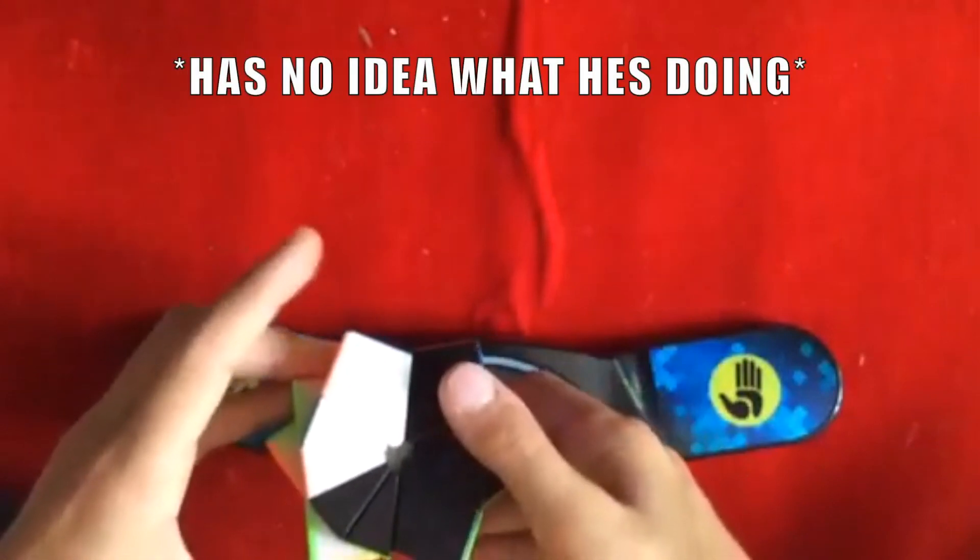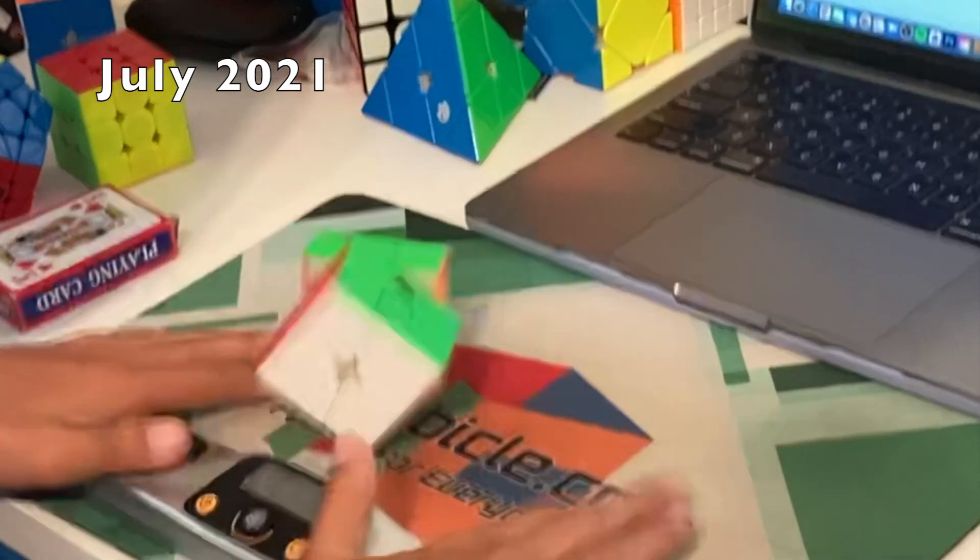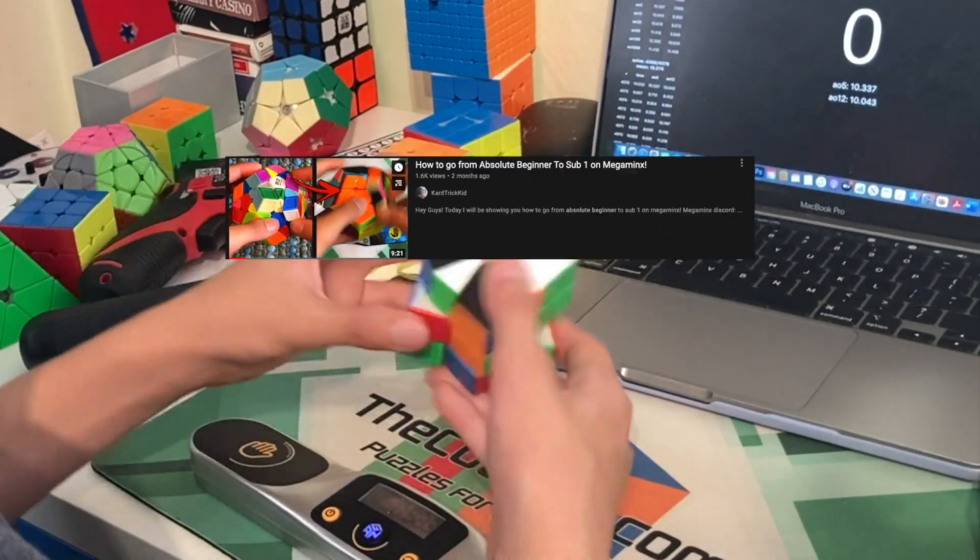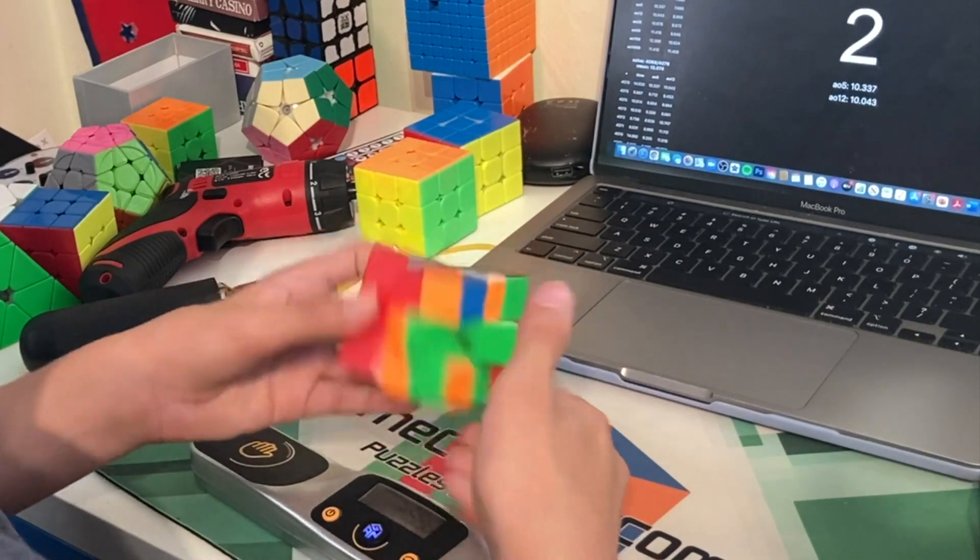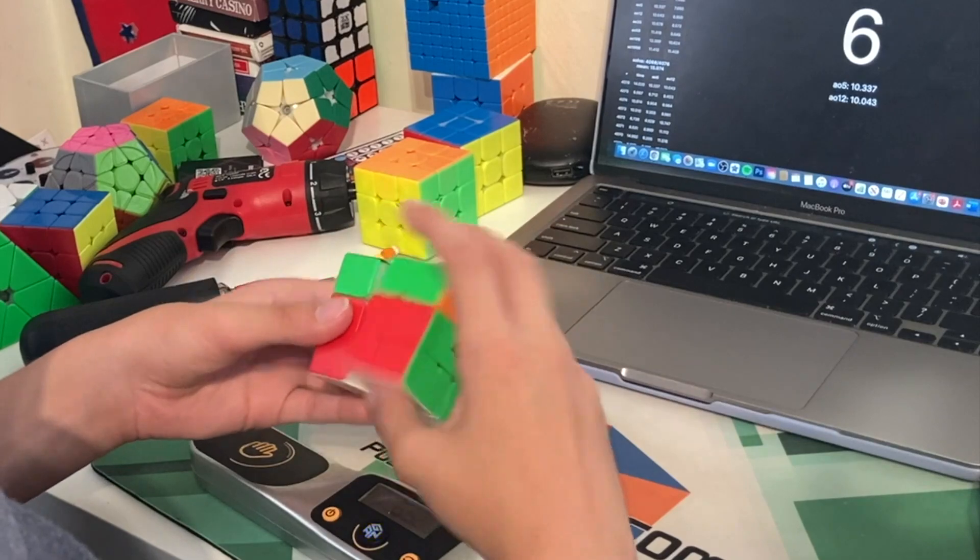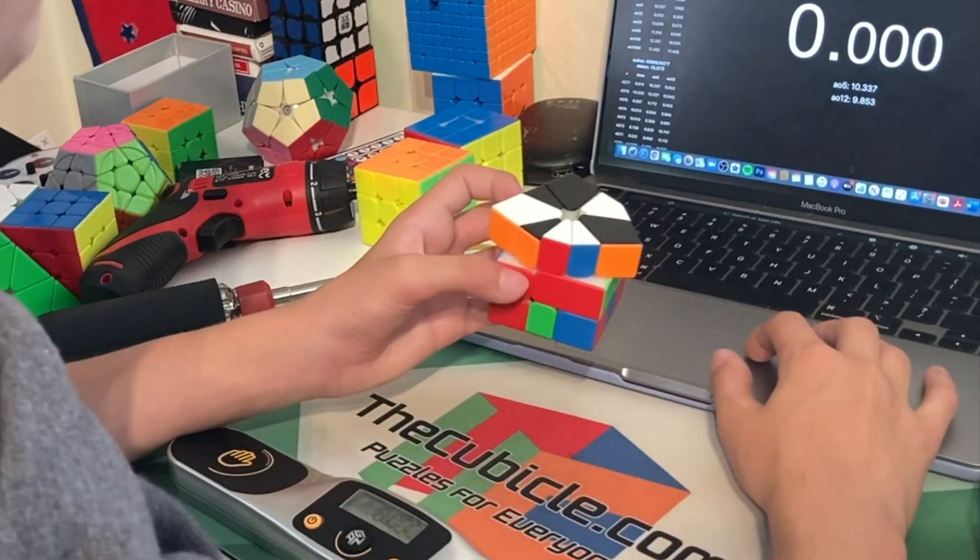Okay, so square one isn't my strength as you can see right now. Now I've already done two of these videos for 3x3 and Megaminx, but today I'm going to be showing you how to go from absolute beginner on square one to sub-15 or even sub-12. These tips have brought me from not knowing how to solve a square one to around 10 seconds, so I hope these can help you too.